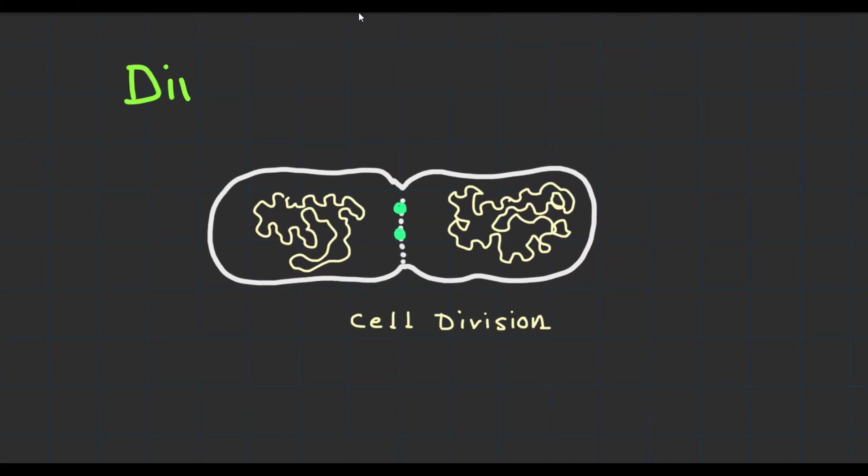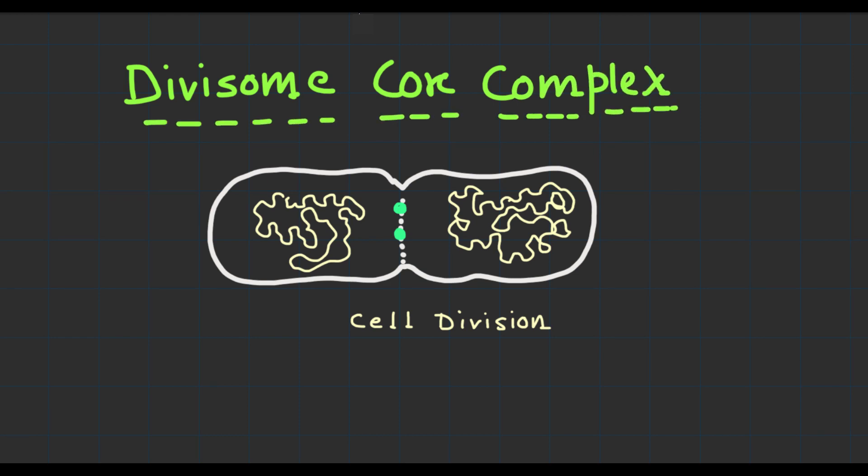And there you have it, a glimpse into the structure and function of bacterial divisome core complex. This remarkable molecular machinery is essential for bacterial cells to divide and multiply. Understanding the intricacies of cell division helps us appreciate the complexity of the microbial world.